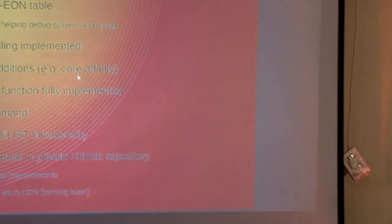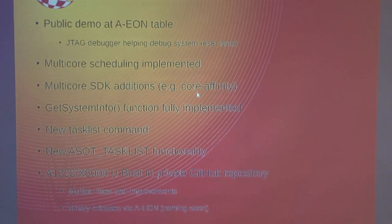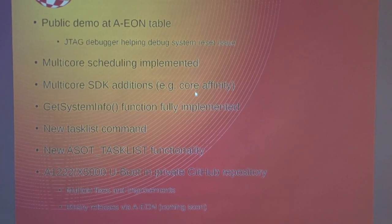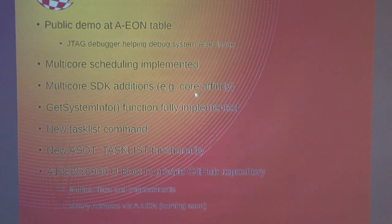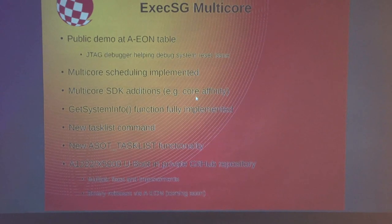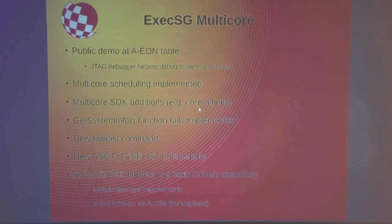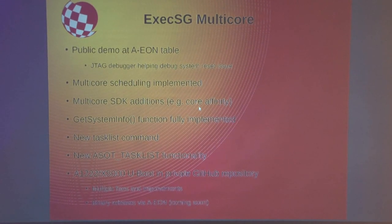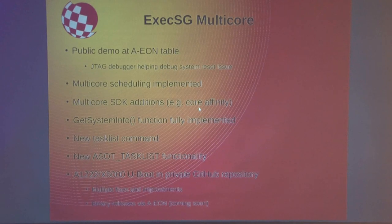Multicore — this is interesting. We've been working hard on this multicore kernel. It uses both cores on your X5020 or four cores on the X5040. It's made some good progress since last time. We've got the public demo over at the Aeon table, which shows — not a very exciting demo because we couldn't get it to stop crashing — but it is working. You can see two cores up on a 20 machine, both running tasks at the same time.